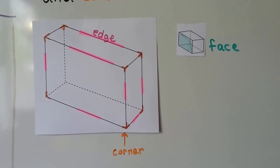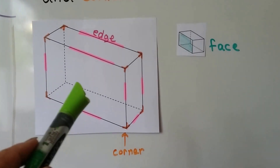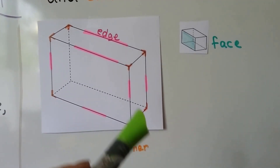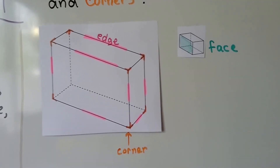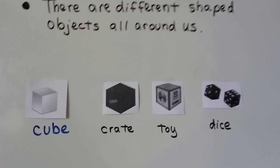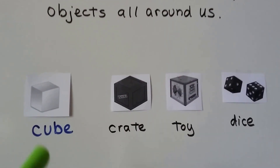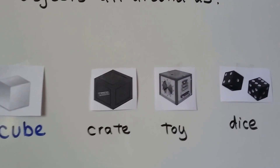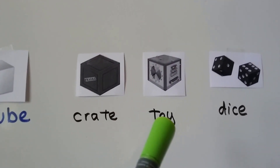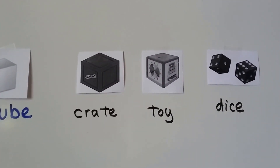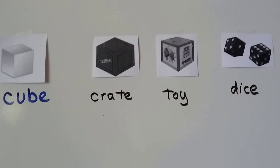When a shape has three dimensions — length, width, and height — it's a 3D shape. There are different shaped objects all around us. For cubes, it could be a sugar cube, a packing crate, a toy like a jack-in-the-box, or dice — those are all cubes.